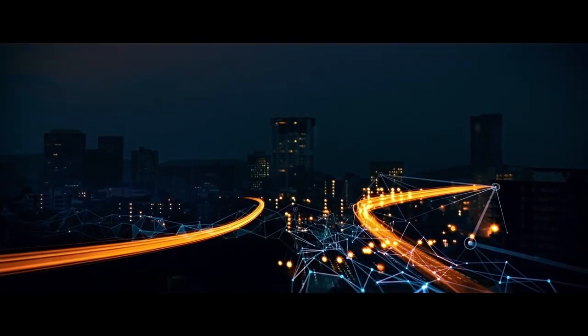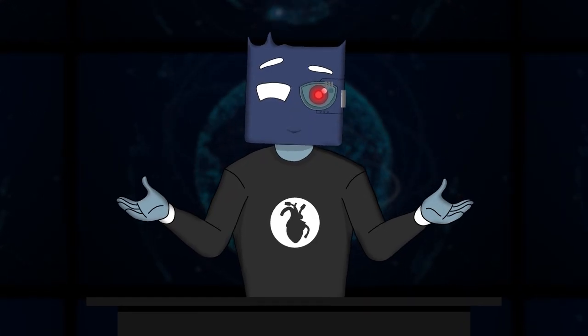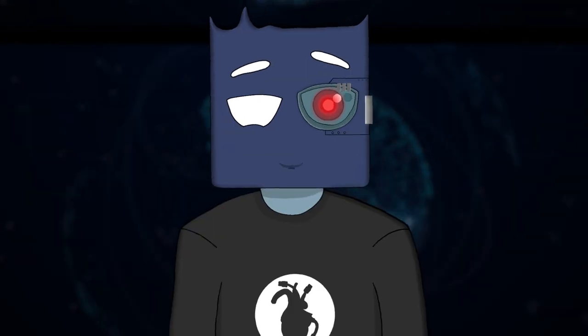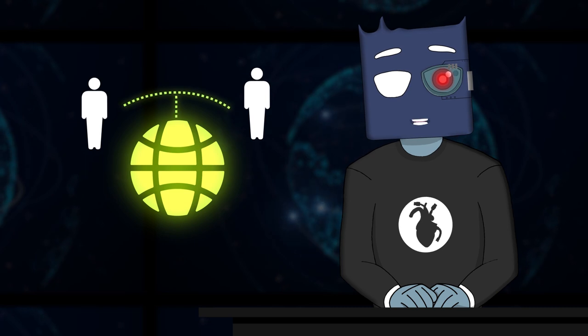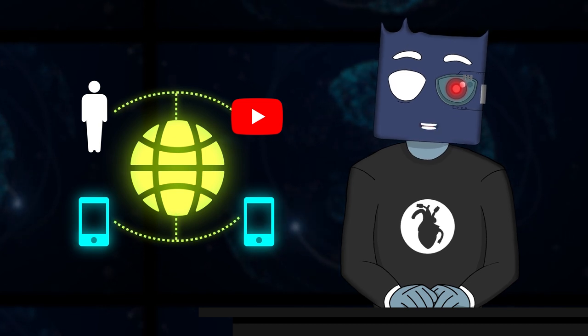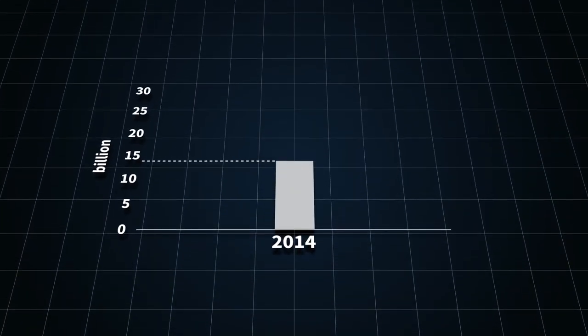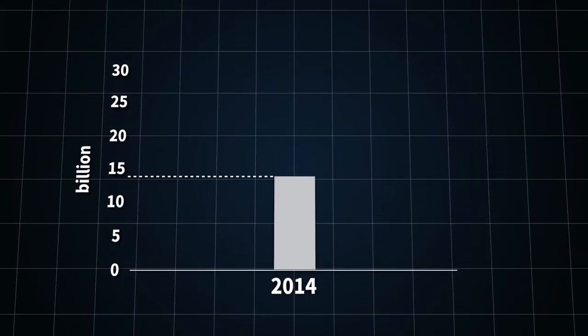How much more can we circle around the idea that the amount of data consumed is growing exponentially? At the moment, right now, a crucial event is happening which will be included in textbooks in the future. Now not only people connect via the internet, but a machine can communicate with another machine. In other words, devices can talk to each other. In 2014 about 14 billion different gadgets were connected to the network.